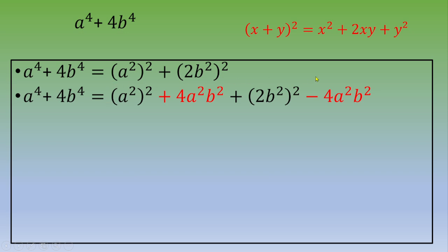With these three terms we can write this remarkable identity. This is a squared plus 2b squared squared minus 4a squared b squared.